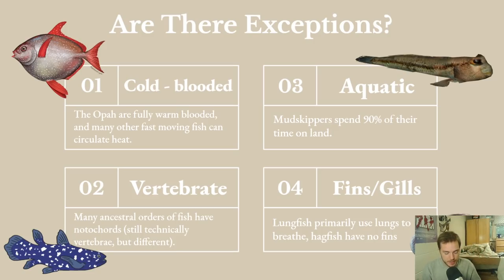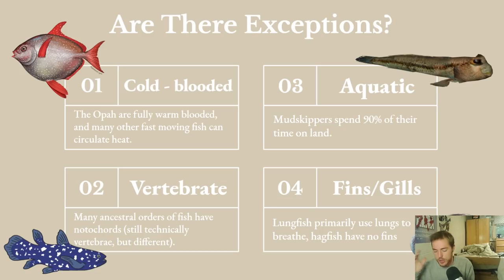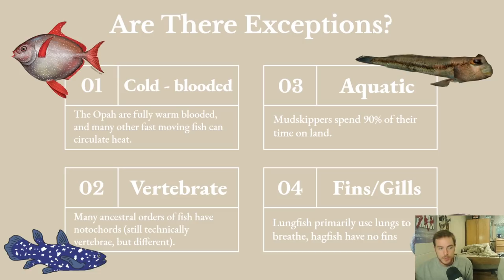There are obviously notable exceptions no matter what you're looking at, and it's important to keep that in mind because not everything will fit your exact description of a fish. When we're talking about fish, we're talking about hundreds of millions of years of evolution. Things are not going to be as simple as differences between human beings or other more recently evolved groups of animals.